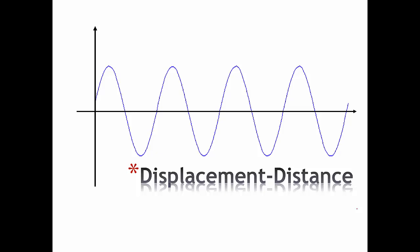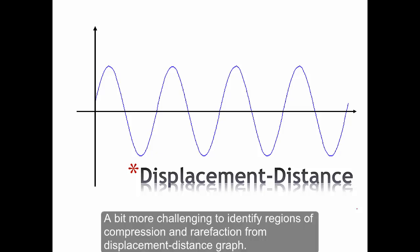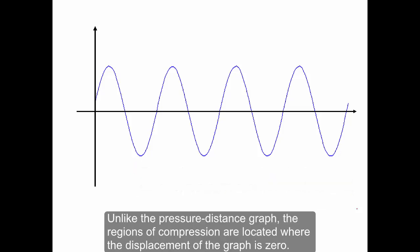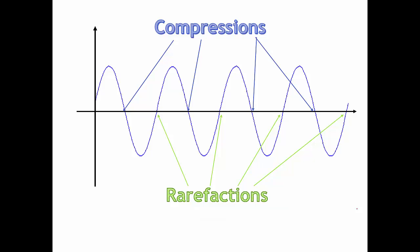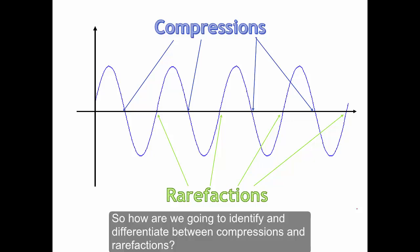It is a bit more challenging to identify regions of compression and rarefaction for a displacement-distance graph. Unlike the pressure-distance graph, the regions of compression are located where the displacement of the graph is zero. To complicate things further, the regions of rarefaction are also at the location where the displacement is zero, as indicated in the picture. So how are you going to identify and differentiate between compression and rarefaction?